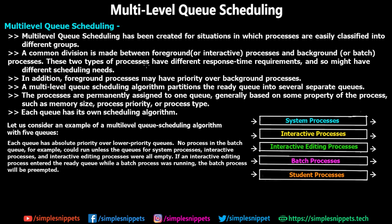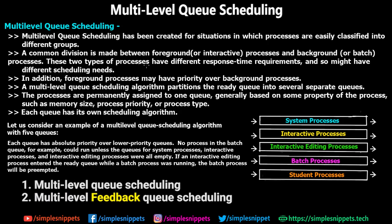If you've been following this CPU scheduling algorithm playlist, we've seen quite a lot of algorithms — first-in first-out, SJF, SRT, priority-based, round robin, and so on. Multi-level queue scheduling was left out, so today we are covering it. There are two different types: multi-level queue scheduling, which is the basic one, and multi-level feedback queue scheduling, which we'll see in the next video.